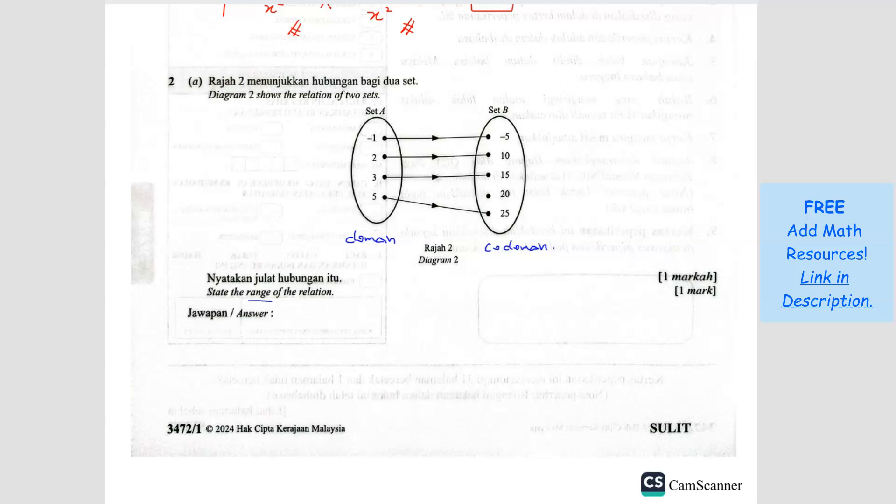So where is the range? The range is basically everything in the co-domain that has an object. So in this case, the range will be everything in the co-domain that has an object.